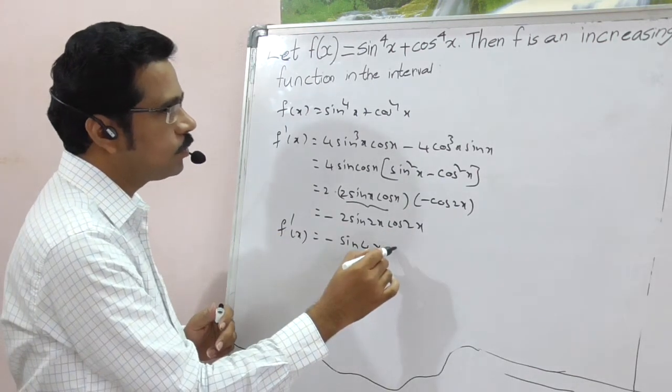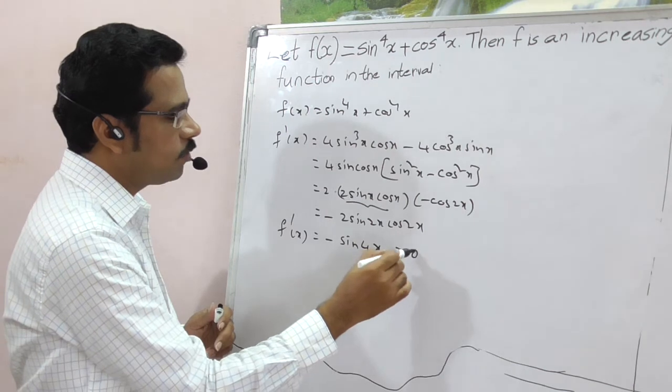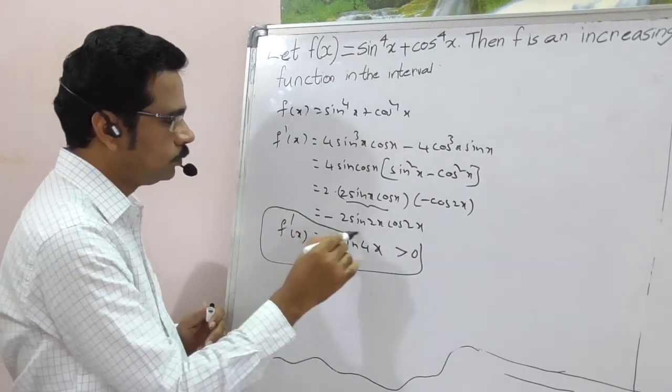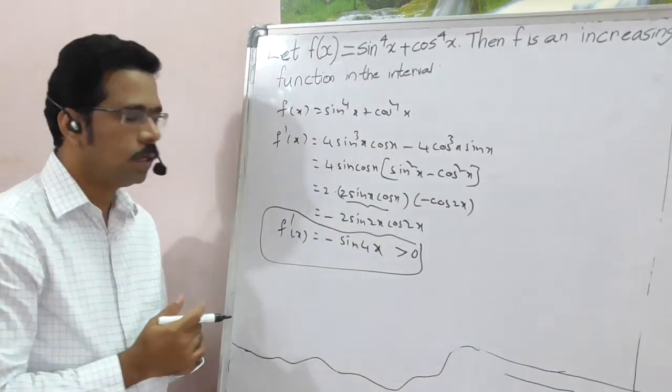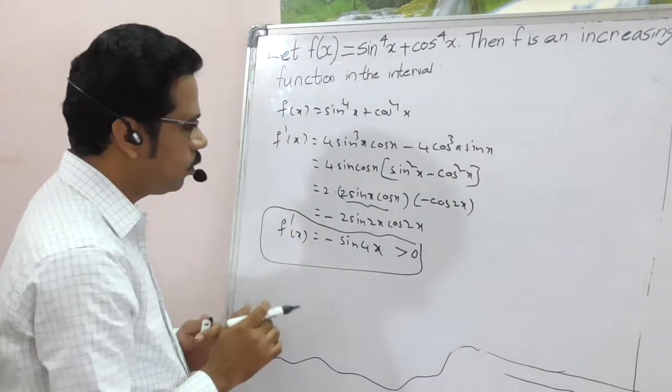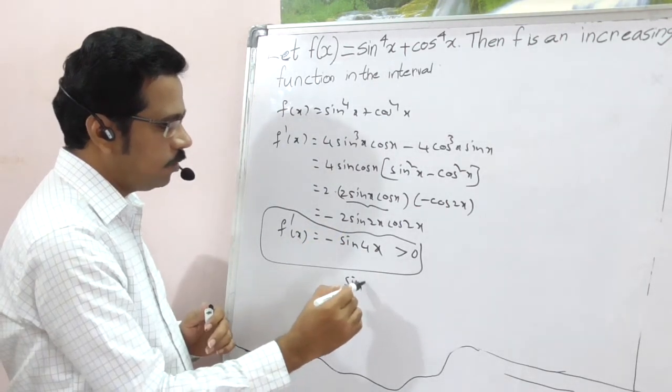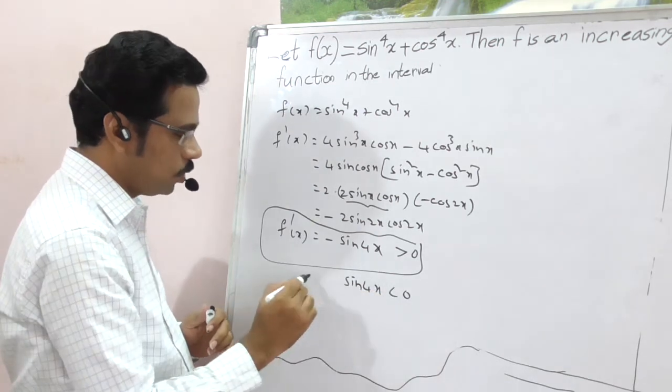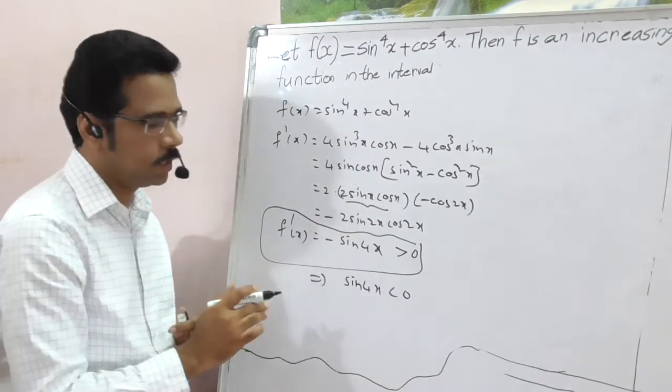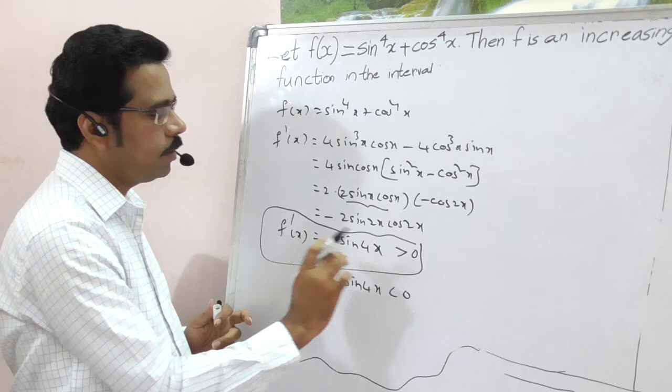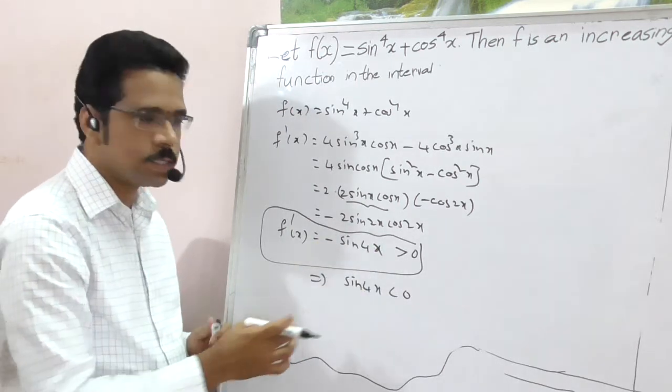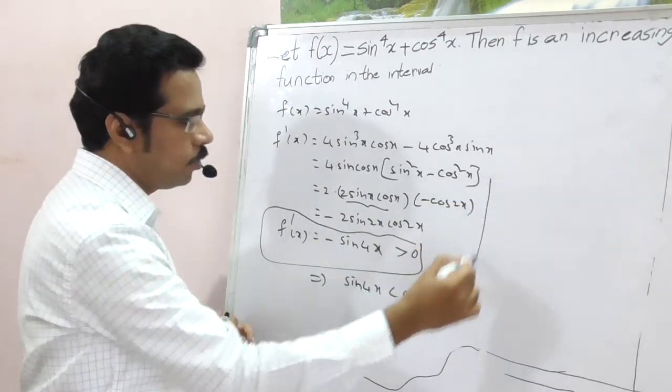But clearly, given that this is what? Increasing function. Therefore, this is greater than 0. So minus sin 4x greater than 0 means, multiply with minus. Here you get sin 4x less than 0. We have to calculate interval here. So if you multiply minus, the inequality changes. This term becomes sin 4x less than 0.